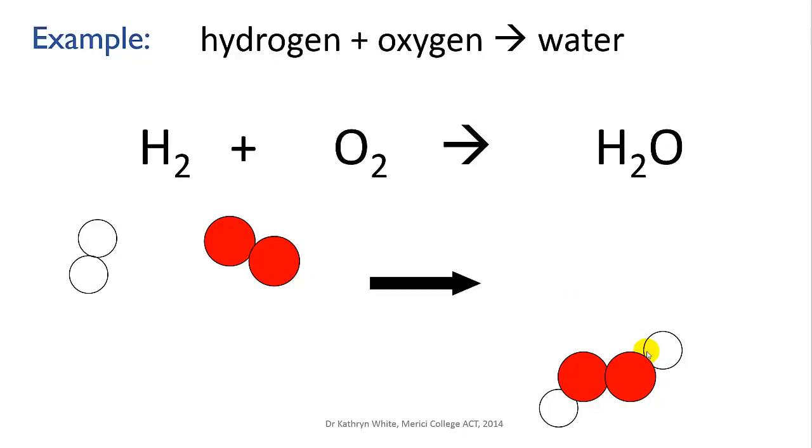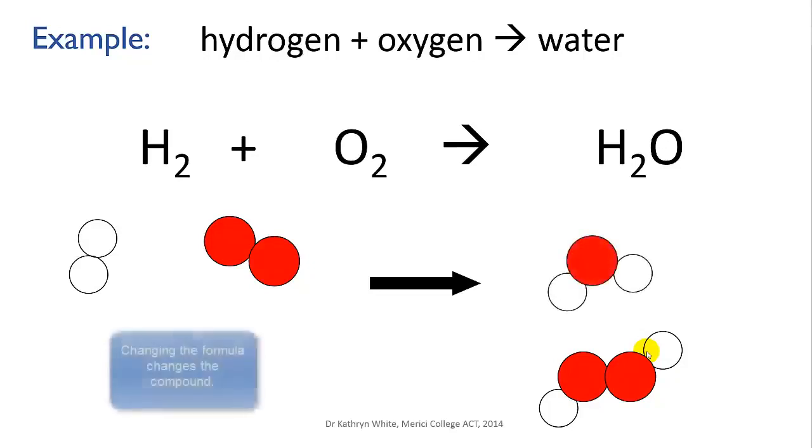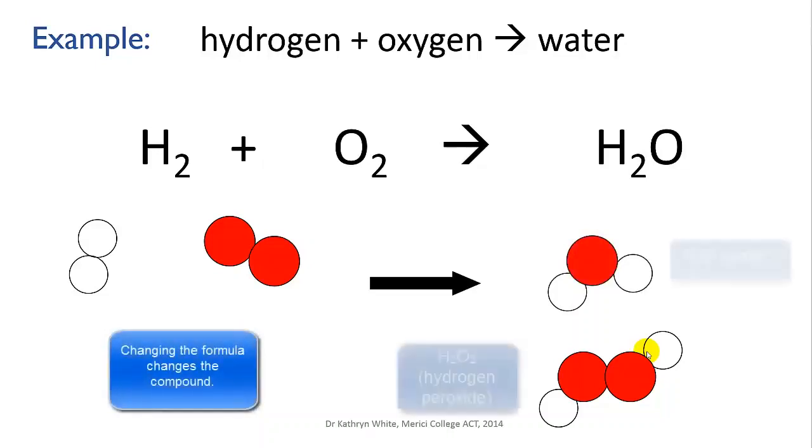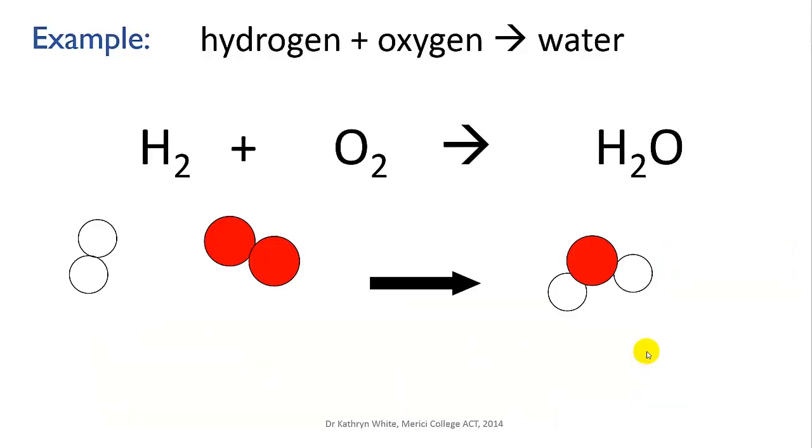No, we cannot do it. And the reason that we can't do it is that by changing the formula, you completely change the compound. H2O2 is hydrogen peroxide, a highly reactive bleach. It's really not something you want to be knocking back a glass of.